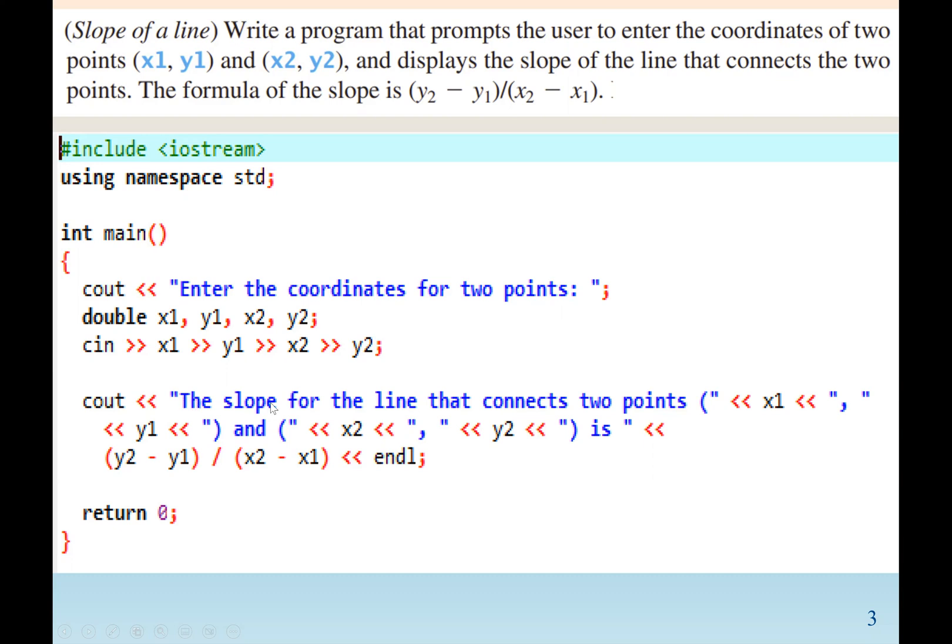So we have the formula here. We can see that the slope for the line that connects two points, this is a string because it's in double quotation. This x1 will print because it's also in double quotation. But we can see that the content, the formula, there's no double quotation.